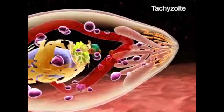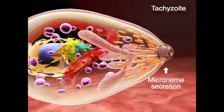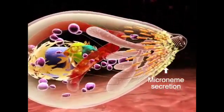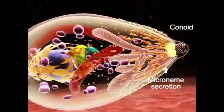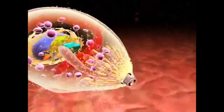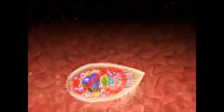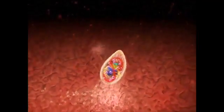The tachyzoite of Toxoplasma gondii moves by gliding in the extracellular space, projecting this hollow-cylindric structure, the conoid, and secreting proteins from the micronemes, here seen as yellow circles.